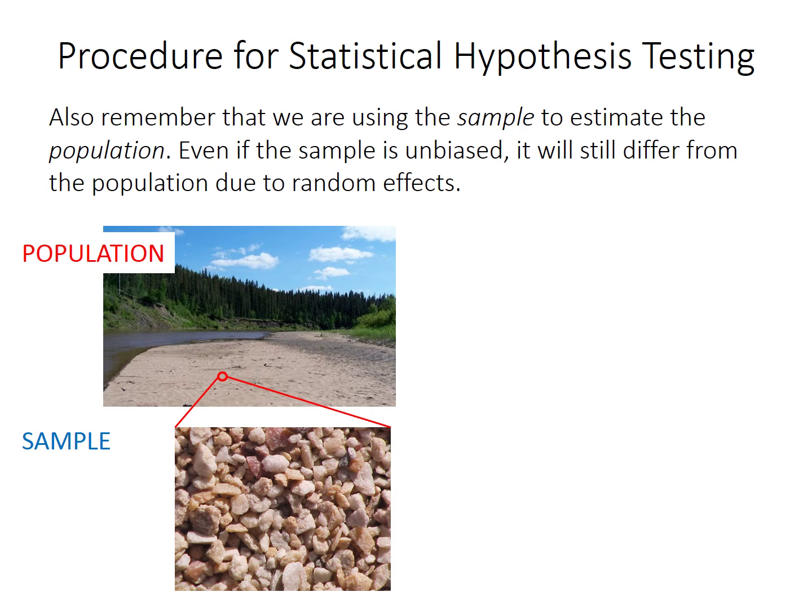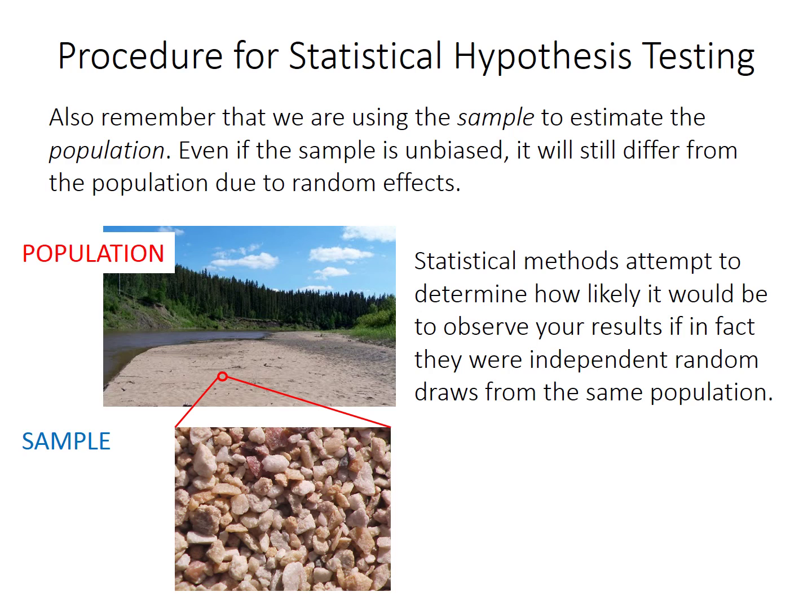So remember that we're using the sample to estimate the population. Even if your samples are unbiased, meaning they're not deliberately higher or lower than the population, you'd still expect two samples to differ from each other to some degree just because they're randomly drawn from the population. So the main point of statistical hypothesis testing is to determine how likely your observations are if the null hypothesis is true.